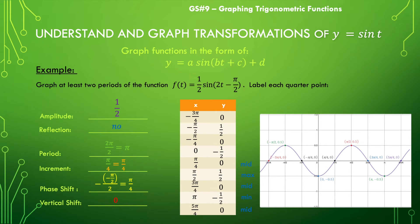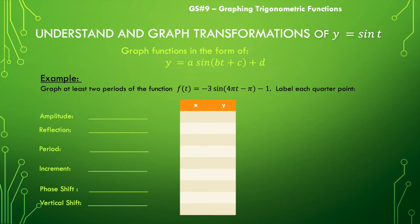All right, so let's do one more example like this and then we'll move into cosine. This last example incorporates all the different possible transformations. We have an amplitude of the absolute value of negative 3, which is 3. We have a reflection over the x-axis because of that negative in front of the 3. We know our period will be 2pi over 4pi, which will give us one-half. And if we divide one-half by 4, we get one-eighth.